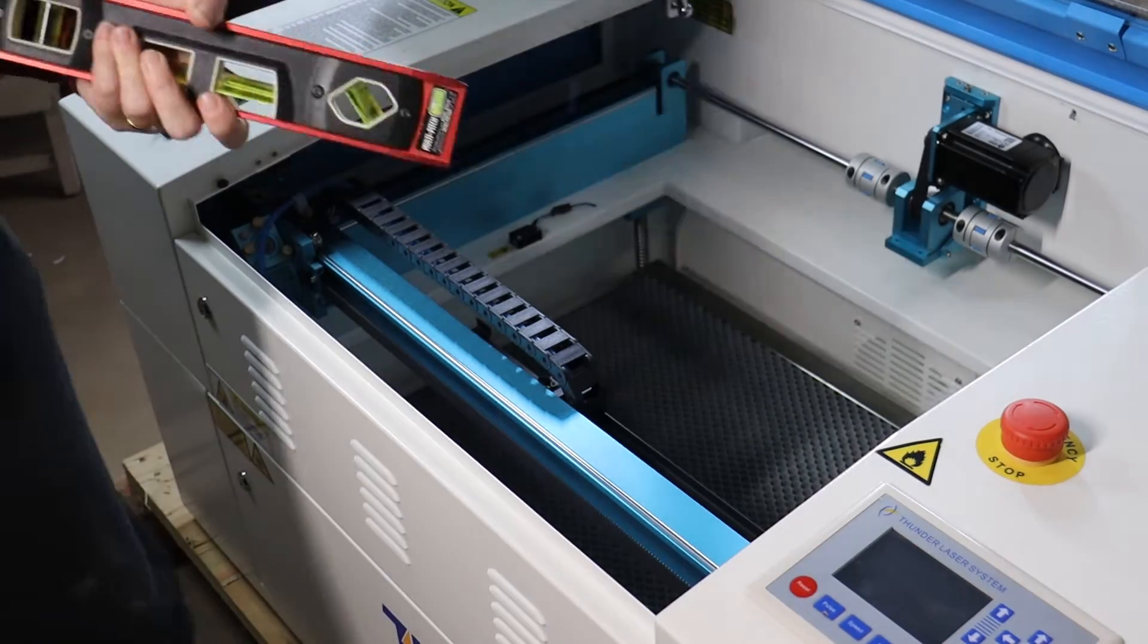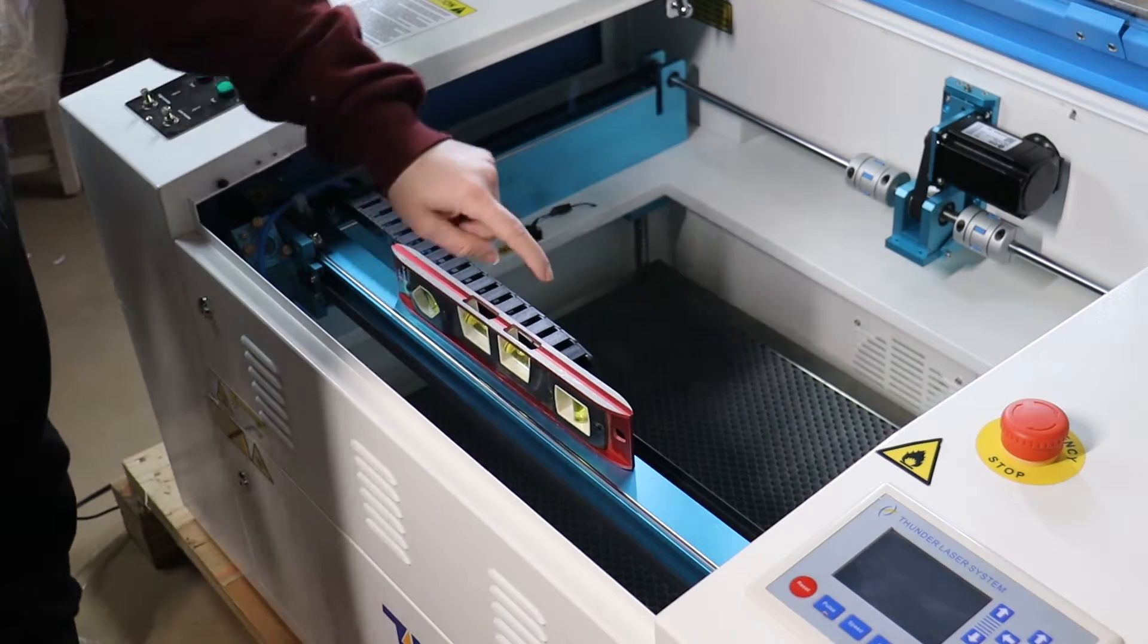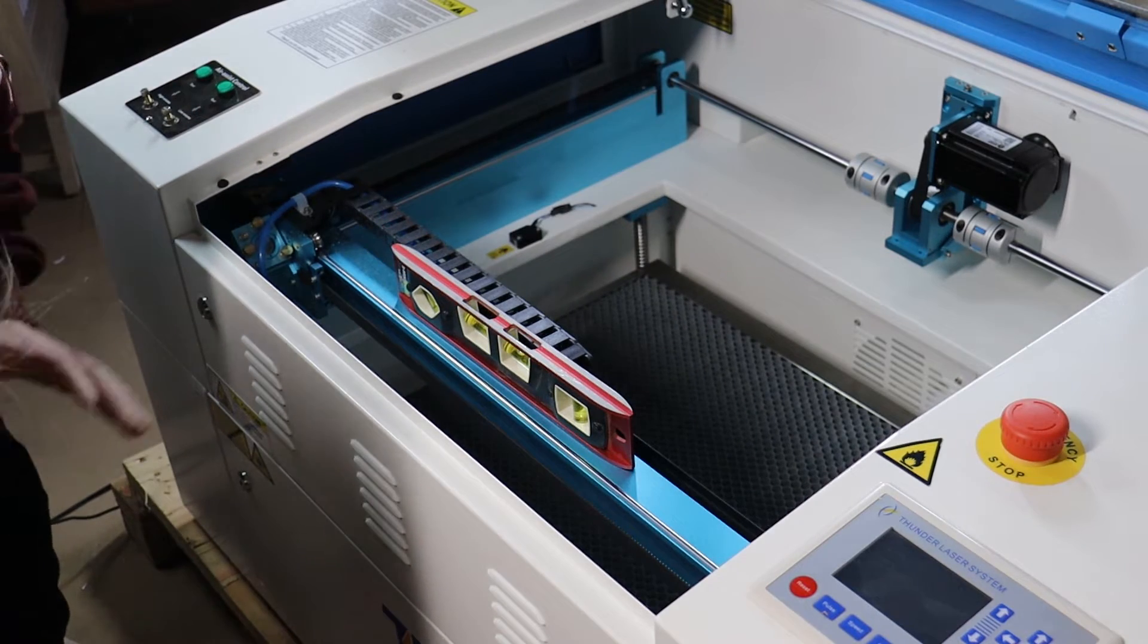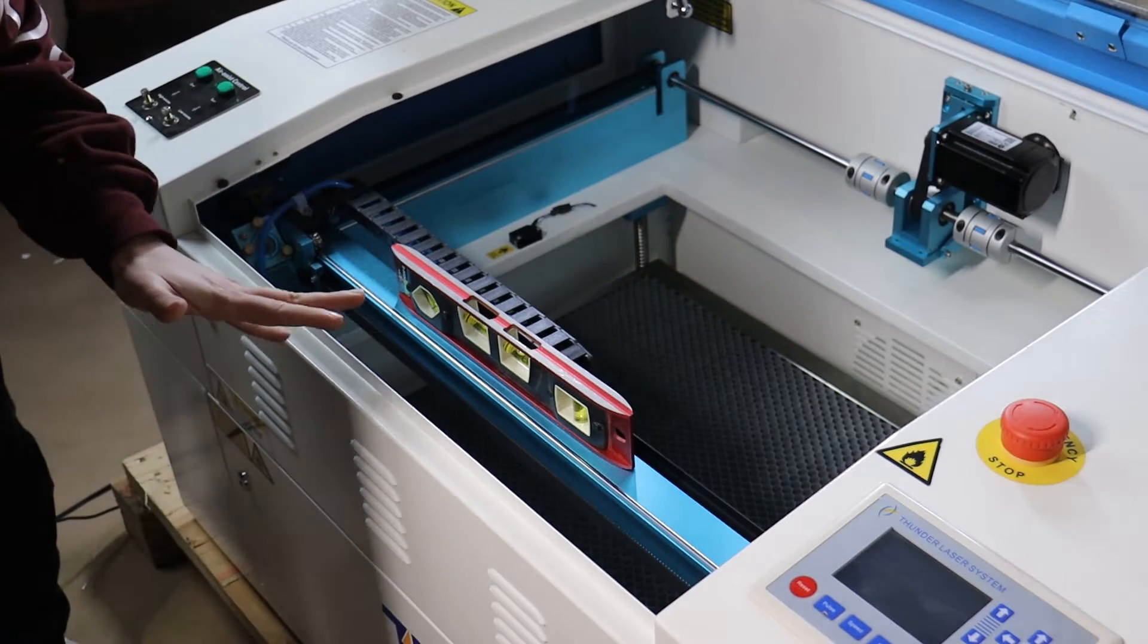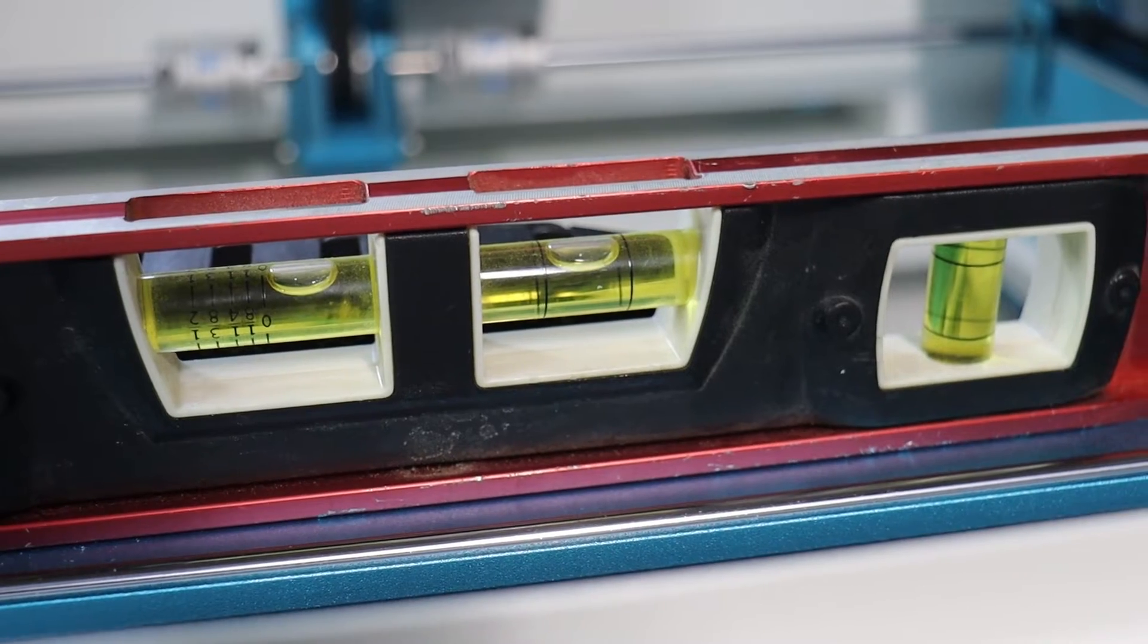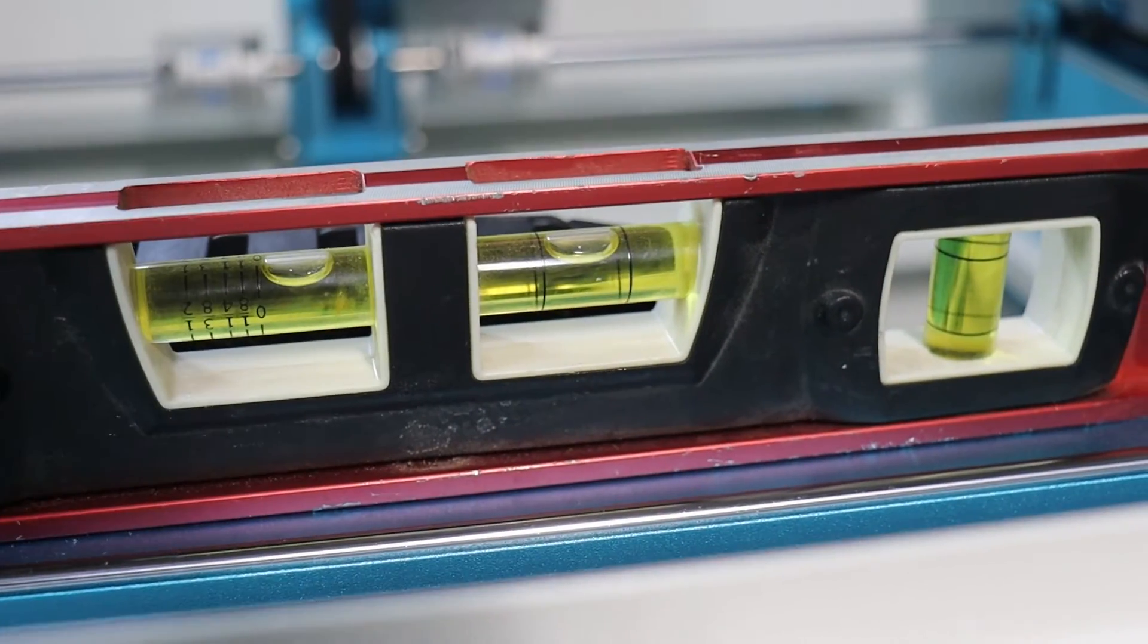Next thing we want to do is we want to make sure that our laser is level. So we are going to take a little level, set it on this bar right here and make sure that the bubble is level. Once we know our laser is level, we're good to continue. If your laser is not level, you use the little feet at the bottom and twist them up and down to get it level.